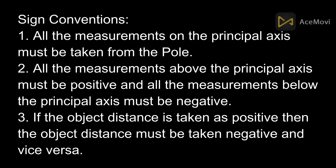The measurements above the principal axis must be positive and the measurements below the principal axis must be negative. If the image distance, that is v, is positive, then the object distance, that is u, shall be negative and vice versa.